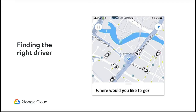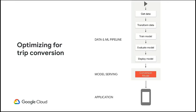We originally started with one North Star metric — conversion. What is the likelihood that a successful trip will be completed between a specific pair of a customer and a driver? We built the systems to deploy this model into a serving environment. We implemented Airflow for data and ML pipelines, and Kubernetes for model serving. The backend would send us a list of drivers, we'd re-rank them according to likelihood of converting, and choose the top driver. There was an uplift in conversion, and we thought it was a job well done.